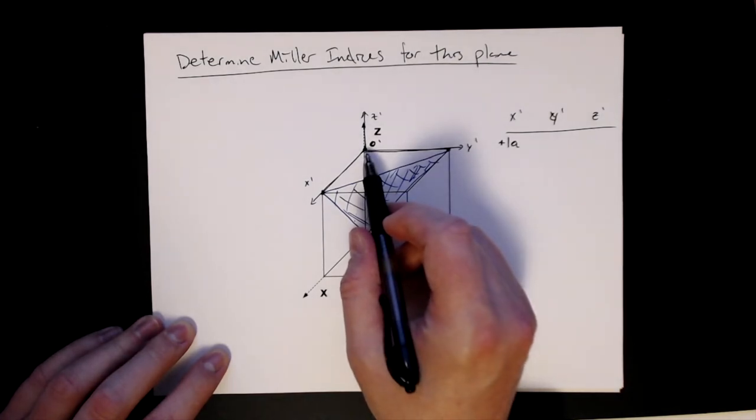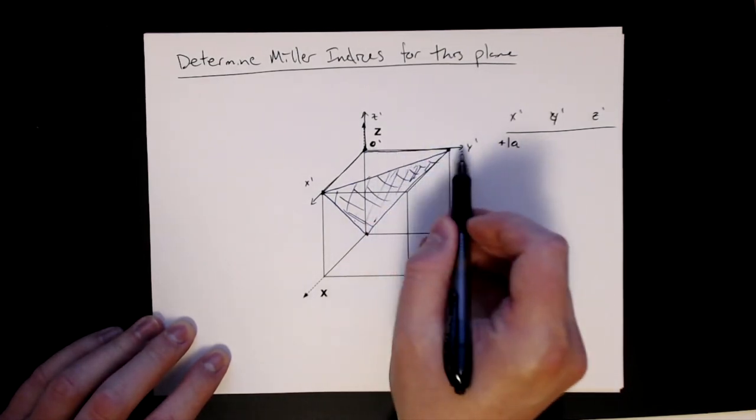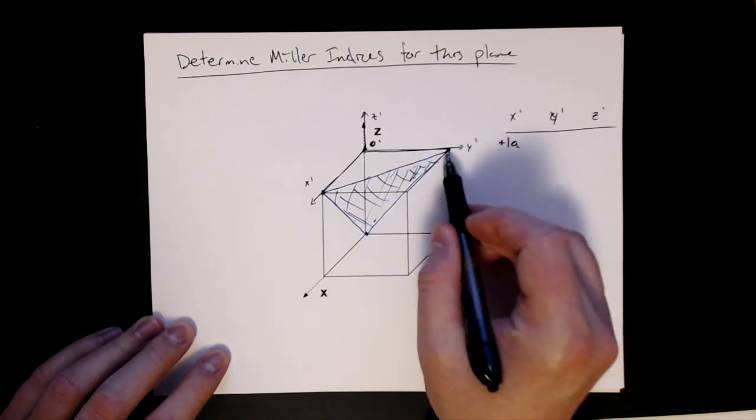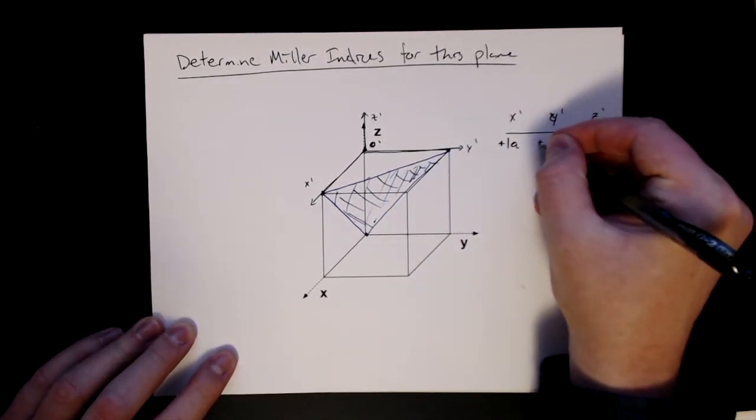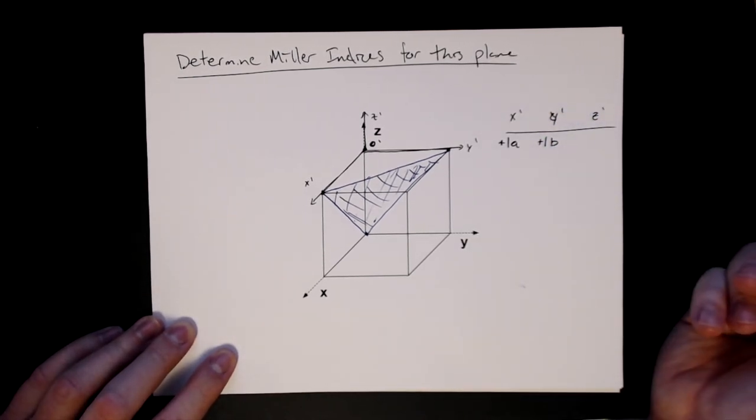Now for the y axis, this is my new y axis, y prime. And I can see that it intercepts here at this corner, right? So that's another plus 1 in terms of b this time.